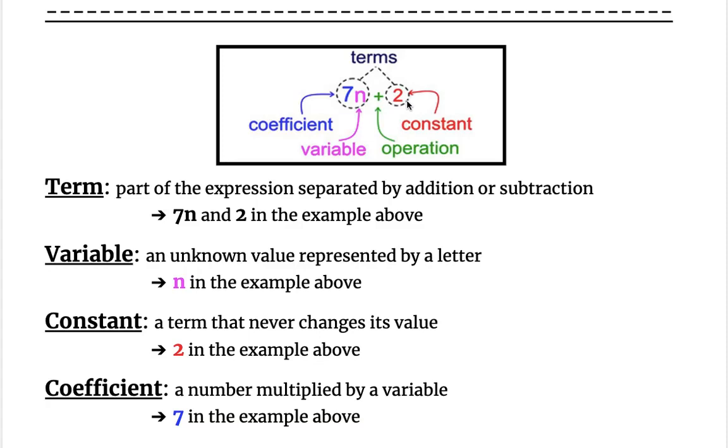The coefficient, which is 7 in this example, is a number that's being multiplied by a variable. So 7n is the same as 7 times n. So the 7 is the coefficient. It's being multiplied by a variable. Again, if you haven't written this down in your notes, be sure to do so.